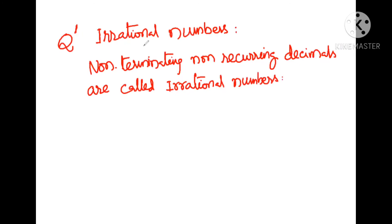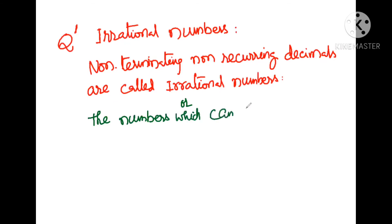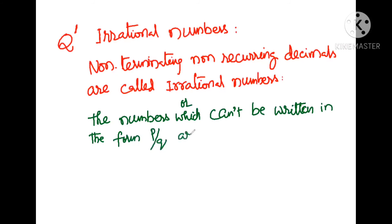We can also state this definition another way: the numbers which cannot be written in the form of P/Q are called irrational numbers.